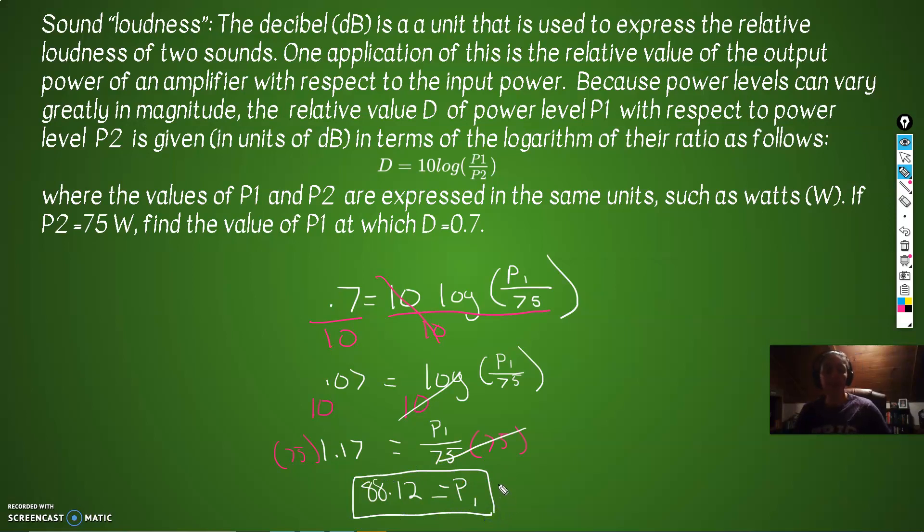So what does that mean? Where P1 and P2 are expressed in the same unit, such as watts. So if P2 equals 75 watts, P1 then would equal 88.12 watts. And there we go.